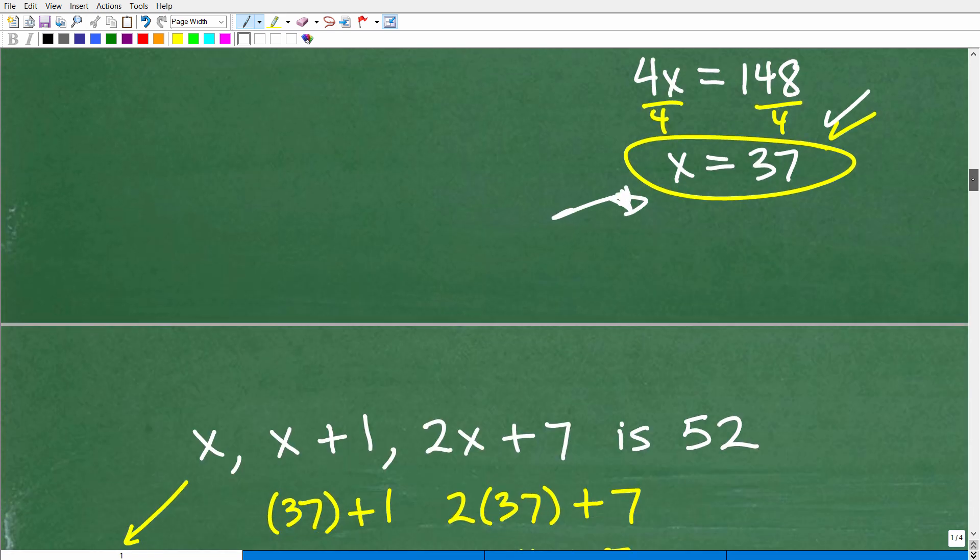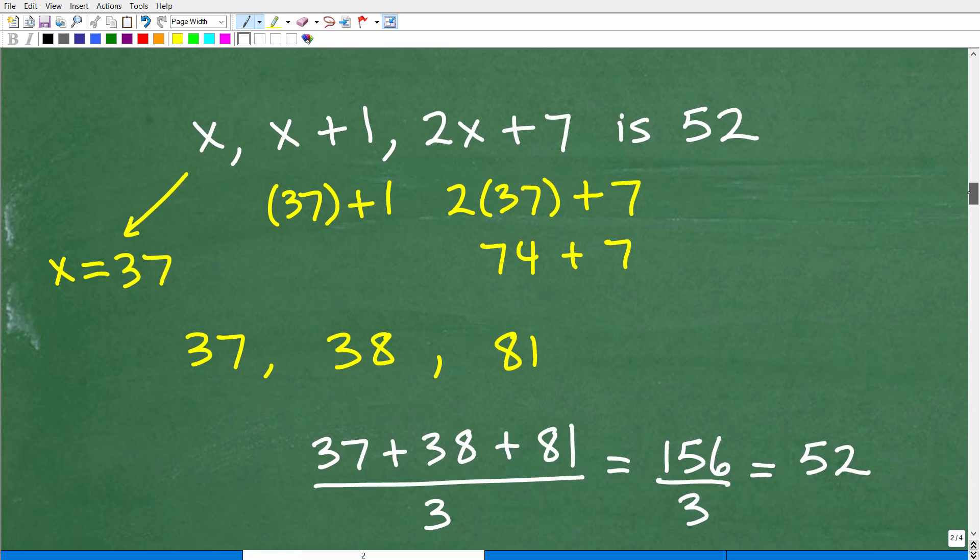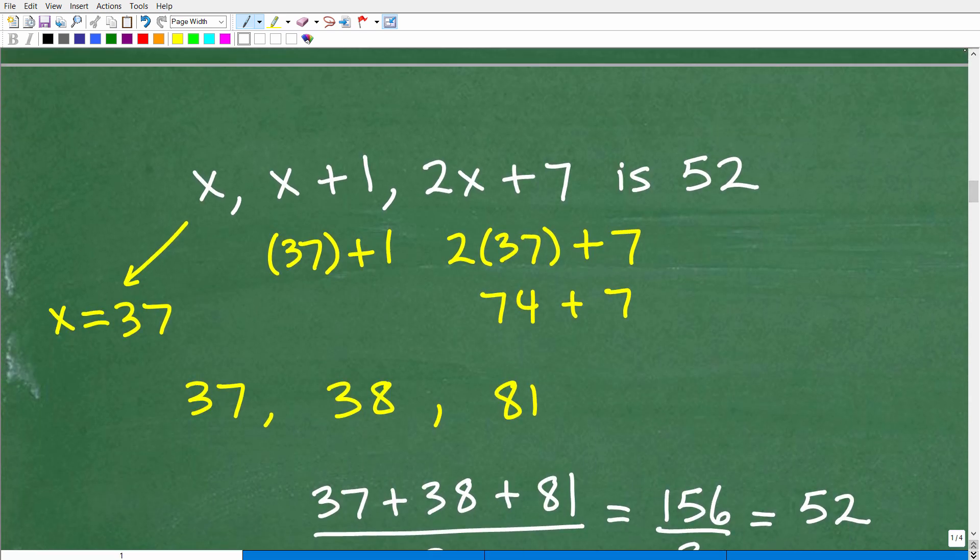All right, so let's go ahead and answer the rest of the problem. Okay, so remember, we were told that x, x plus 1, 2x plus 7, the average of these three numbers is 52. Okay, so we just solved for x. So our first number is 37. So what's going to be our second number? Well, it's going to be x plus 1. We now know that x is 37, so that's going to be 37 plus 1. That's 38. So our first number is 37. Our second number is 38. And our last number is 2x plus 7. Again, we know what x is. That's 37. So that's going to be 2 times 37. 74 plus 7 is 81. So these are our three numbers.